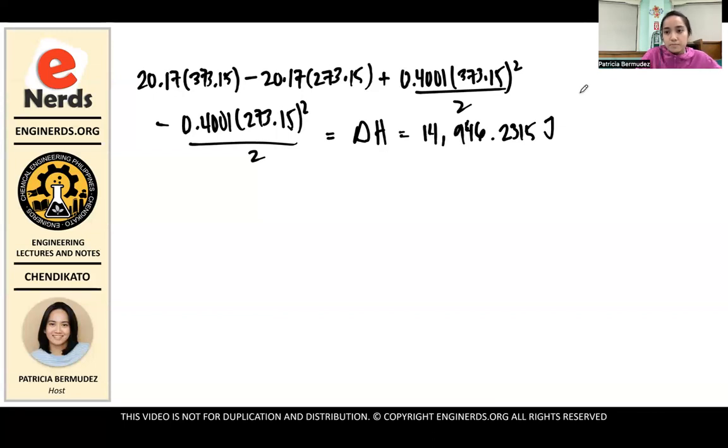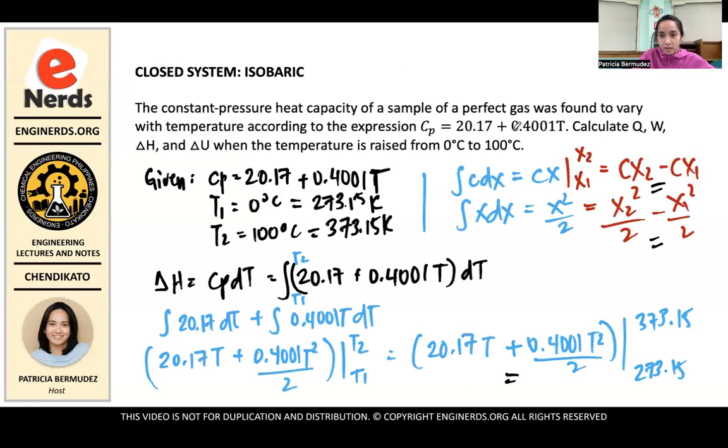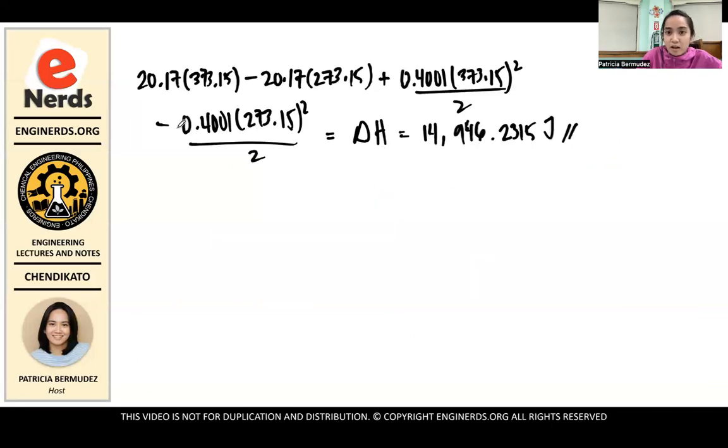So it's equal to 20.17 times 373.15 minus 20.17 times 273.15 plus 0.4001 times 373.15 squared over 2. So the answer is 14,946.2315 joules. The unit is joules. So we have one value. So in our required values, we have found delta H. And because it's an isobaric system, we can actually equate delta H with Q. How?